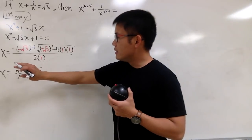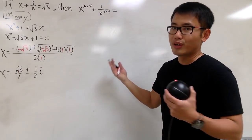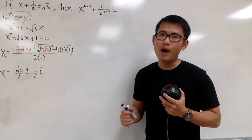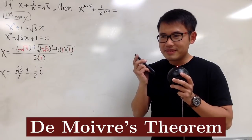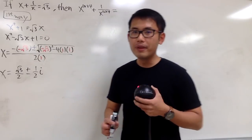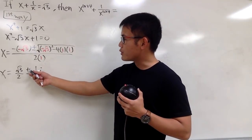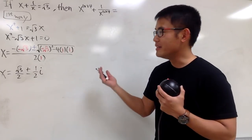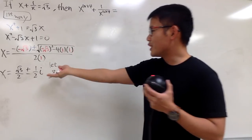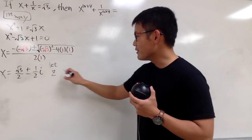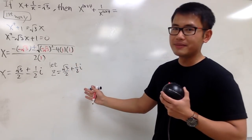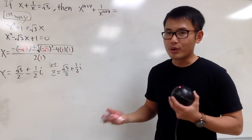We have two possible x values: a plus version and a minus version. We'll plug one into the expression. This is a complex number and we're dealing with a big power, so let's use de Moivre's theorem. To do so, we need to change this into polar form. Whether we pick the plus or minus version doesn't really matter — I'll explain why later. Let z be the complex number square root of 3 over 2 plus one-half i.